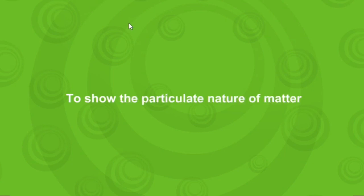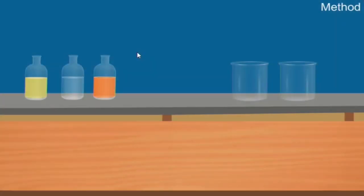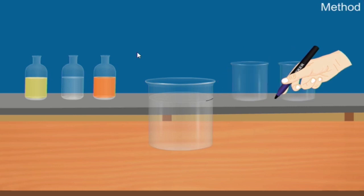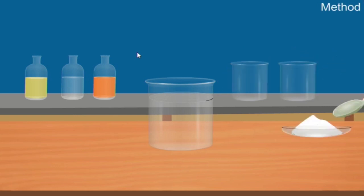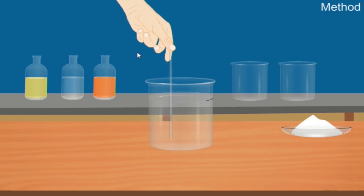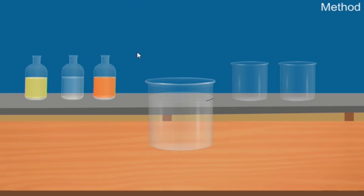Let us show an activity to demonstrate the particulate nature of matter. Fill three-fourths of a beaker with tap water and mark the level with a marker pen or brown cello tape. Pour some common salt in the beaker and stir the contents with a glass rod. Now let us answer the following questions: What happened to the common salt initially? What happened on stirring? What happened to the water level? Where does the common salt go?